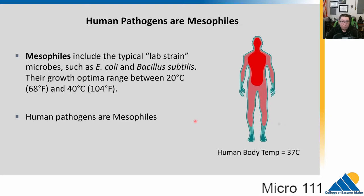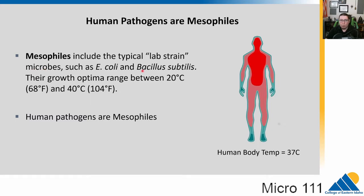Most microbes we work with in the lab, in research, and in medicine are mesophiles — they like near human body temperature. A lot of them grow best at 37°C. We have things like E. coli and Bacillus subtilis, commonly used in experiments. Our human pathogens are mesophiles.